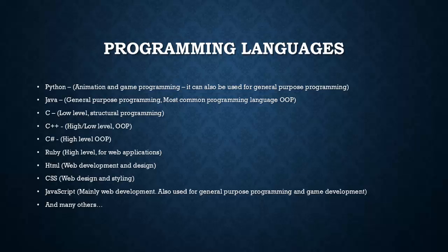Next up is Java. Java is the most common programming language and it is a general purpose programming language, which means it can be used for just about anything. I would not recommend Java for beginners because it is object-oriented and rather confusing to start with. C is another language — it is a low-level structural programming language. Structural programming languages are languages that are not object-oriented, and I will explain that later on.